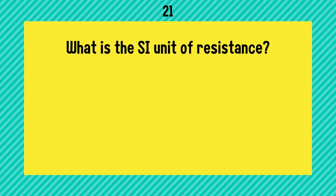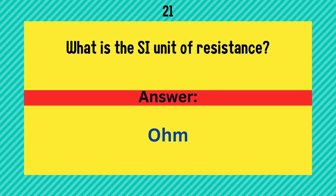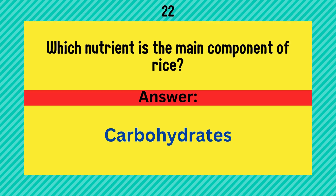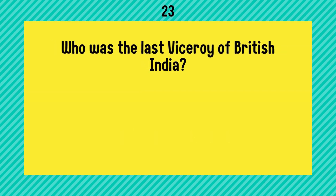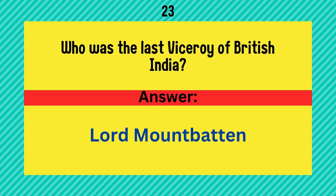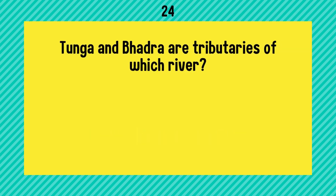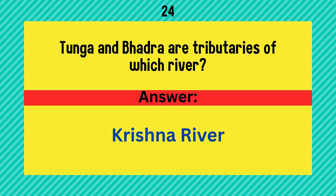What is the SI unit of resistance? Answer is ohm. Which nutrient is the main component of rice? It is carbohydrates. Who was the last viceroy of British India? Lord Mountbatten.